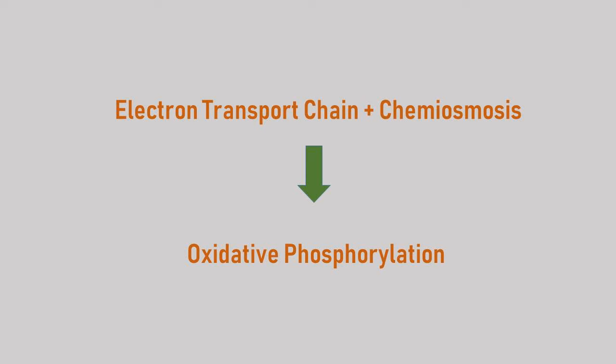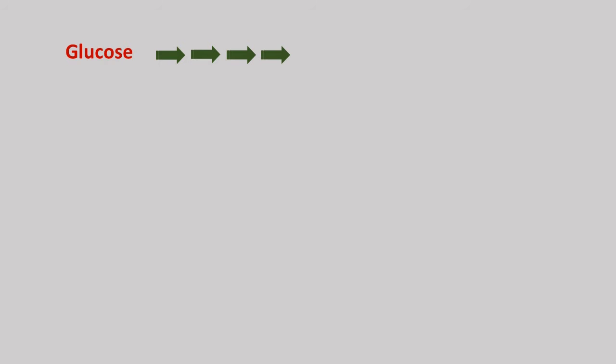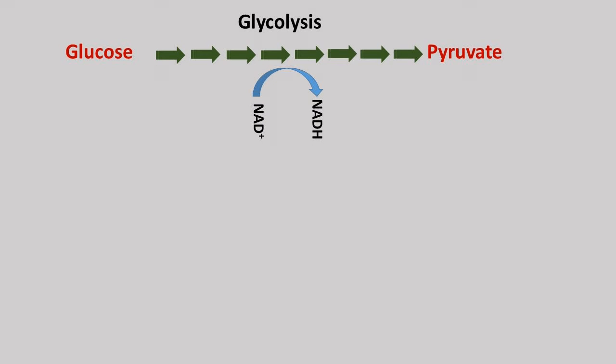Before beginning, let's recap. In previous videos, we talked at length about glycolysis and the citric acid cycle. In glycolysis, oxidation of one glucose molecule converts into two molecules of pyruvate, and we also get reduction of oxidized NAD into NADH. The pyruvate produced in the cytosol is first transported into mitochondria and converted into acetyl coenzyme A by reducing oxidized NAD into NADH.